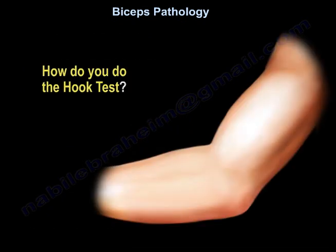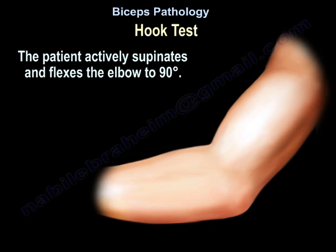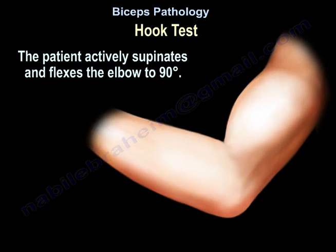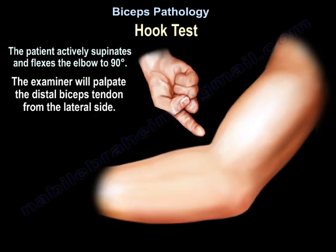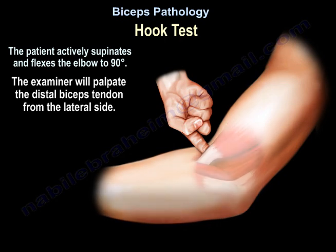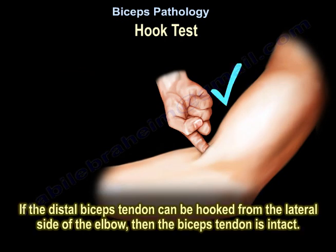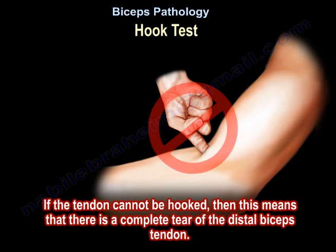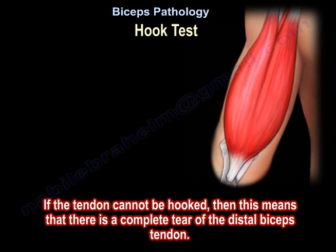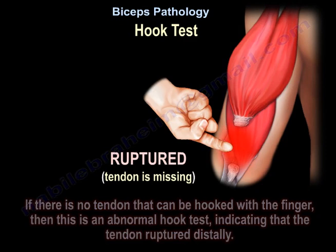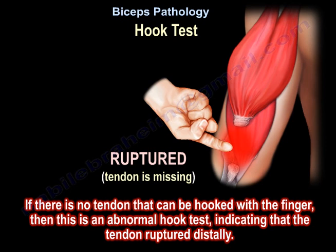Use the hook test for diagnosis. The patient actively supinates and flexes the elbow to 90 degrees, and the examiner palpates the tendon from the lateral side. If the distal biceps tendon can be hooked from the lateral side of the elbow, then the biceps tendon is intact. A complete biceps tendon tear is detected if there is no tendon that can be hooked with the finger — this is an abnormal hook test indicating the tendon has ruptured distally.